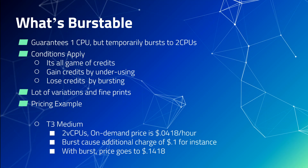If you are continuously bursting for one hour, you will be charged that additional cost, bringing the price to $0.1418. So the initial price with the guaranteed CPU is $0.04, but if you use the bursting, it goes to $0.1418 — which is not a simple cost optimization. It is actually quite a lot more. I have seen that with various instance sizes, this cost could easily jump 50% or even more than 100% in additional charges.